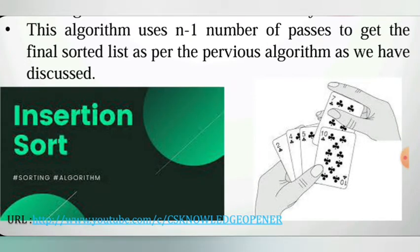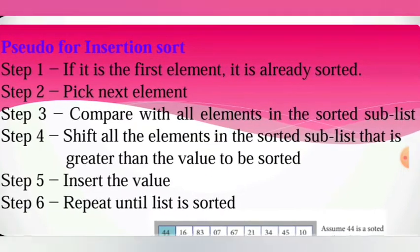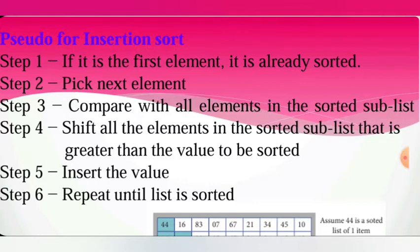This is the insertion sort. We take the first element and assume it is already sorted. We then look at the next element: if we compare it and it is smaller than the first position, we insert it into the correct position. We now have a sub-sorted array. The fourth step: shift all elements in the sorted list that are greater than the value to be sorted, insert the value, and repeat until the list is sorted.